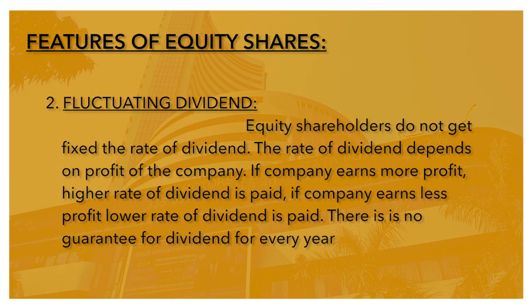Number 2: Fluctuating Dividend. Equity shareholders do not get a fixed rate of dividend. The rate of dividend depends on the profit of the company. If the company earns more profit, a higher rate of dividend is paid. If the company earns less profit, a lower rate of dividend is paid.